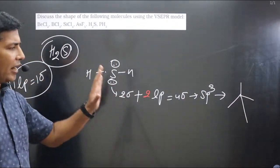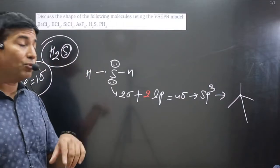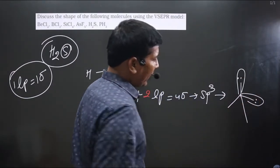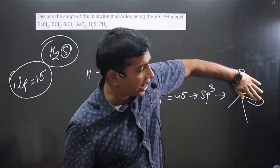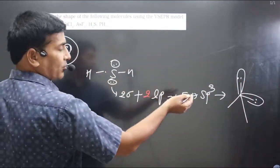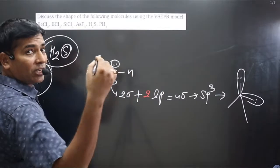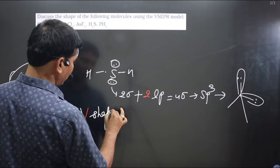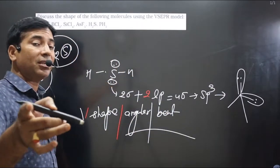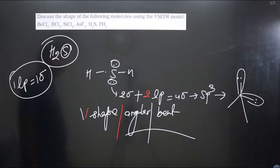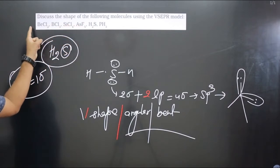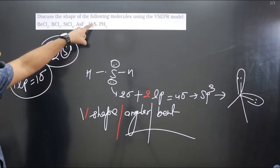The electron geometry is tetrahedral, but shape does not include lone pairs. If we place the two lone pairs and hide that portion, the remaining geometry is bent or angular. So the shape of H₂S is bent/angular because the central element carries two lone pairs, and lone pair–bond pair repulsion changes the shape.